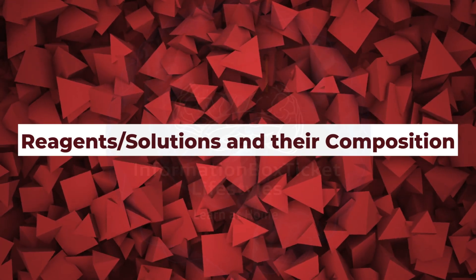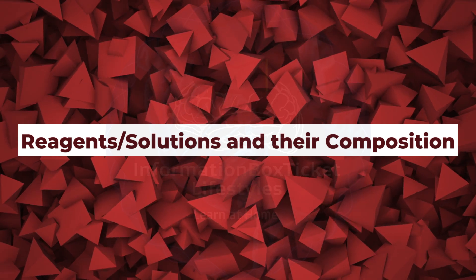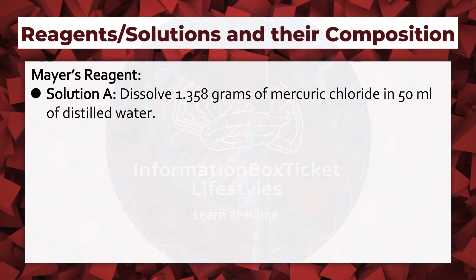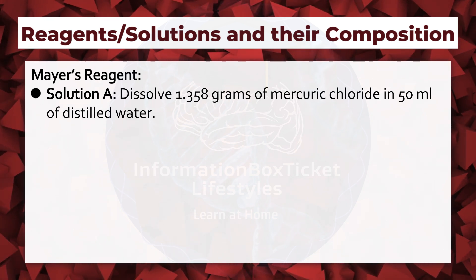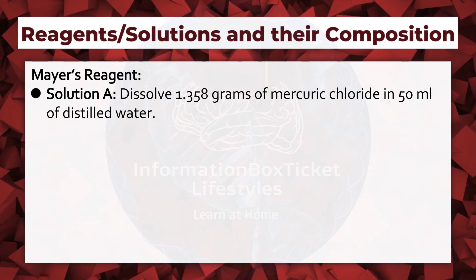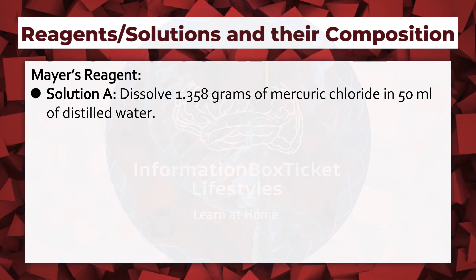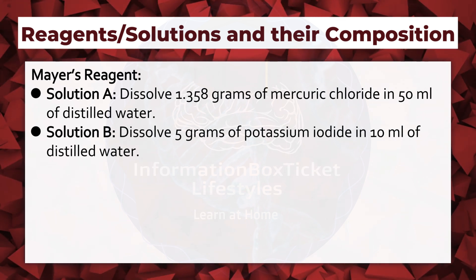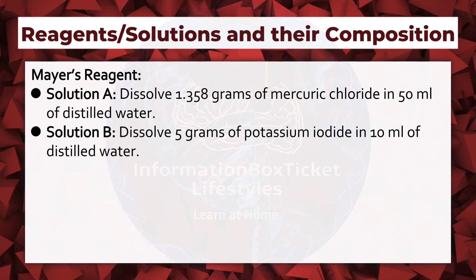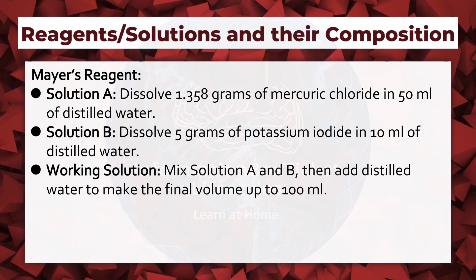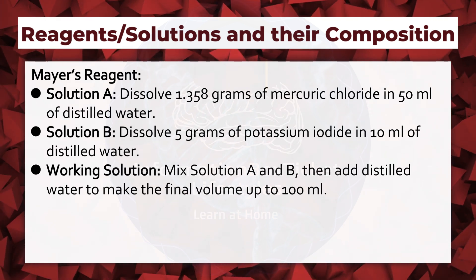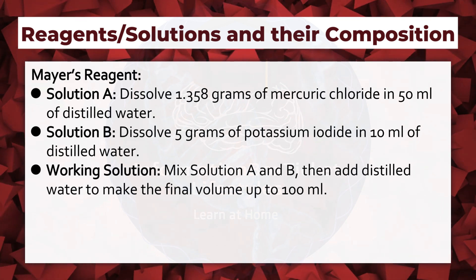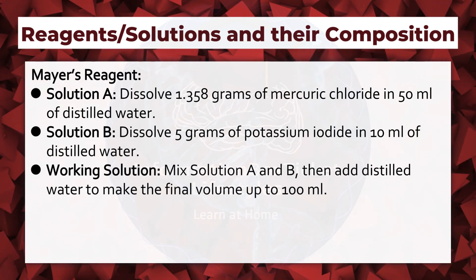Reagents and their composition. Mayer's Reagent: Solution A — dissolve 1.358 grams of mercuric chloride in 50 milliliters of distilled water. Solution B — dissolve 5 grams of potassium iodide in 10 milliliters of distilled water. Working Solution — mix Solution A and B, then add distilled water to make the final volume up to 100 milliliters.